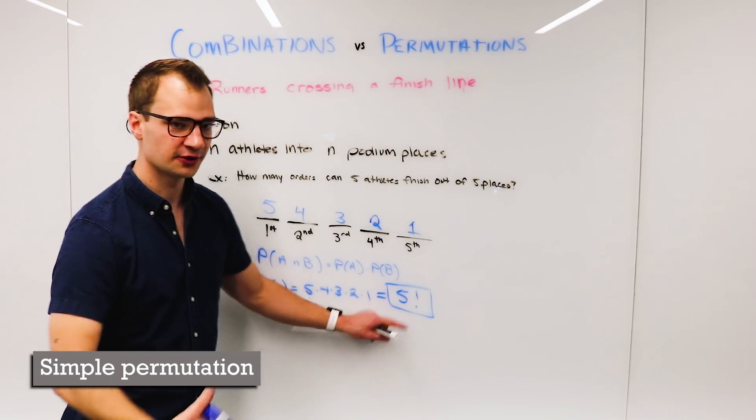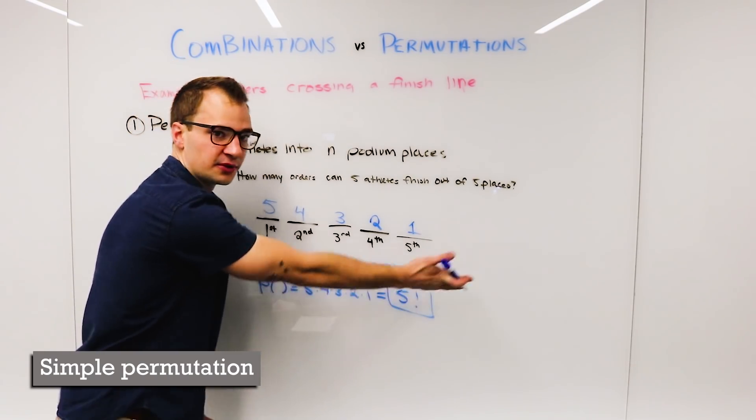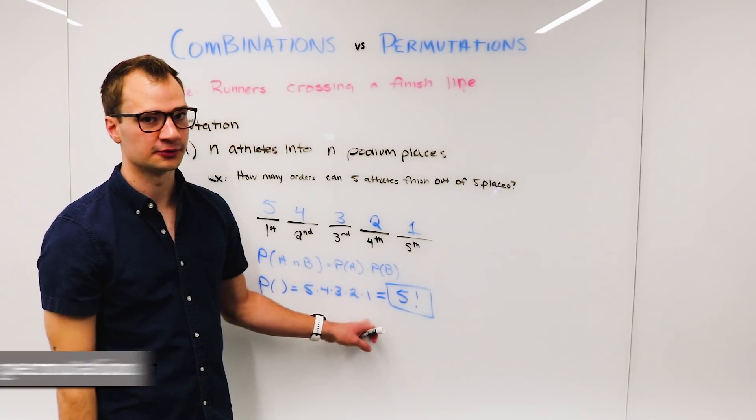Exclamation point means factorial, which means literally this. It's the product of everything: the number multiplied by n minus 1, n minus 2, n minus 3, etc., all the way down to zero.